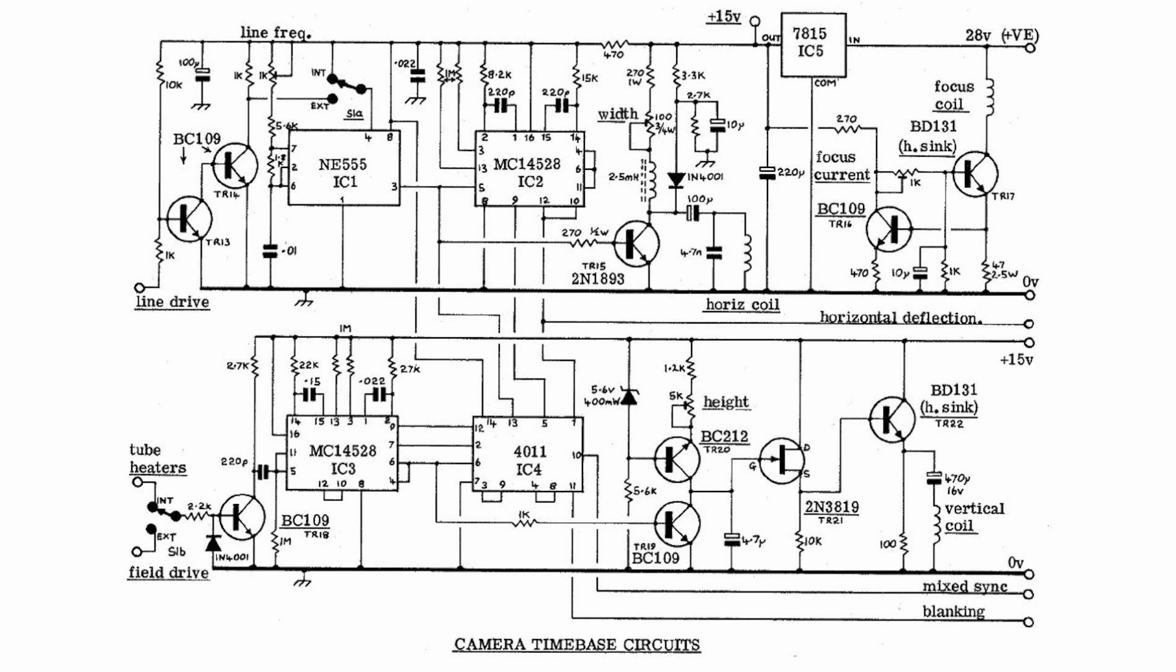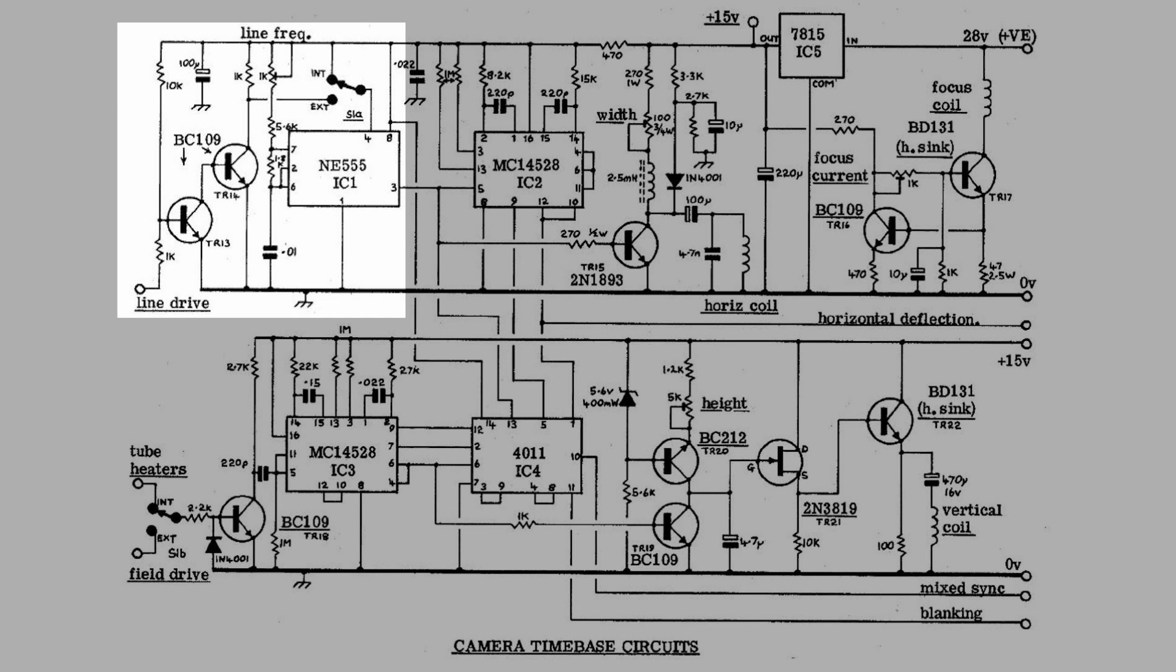So looking at this schematic, let's start by breaking it down into blocks. The first block, which I've highlighted here, is the clock oscillator that drives the horizontal scan. That's an NE555 configured as a stable multivibrator, or in other words, in simple terms, an oscillator. It does nothing more than output a pulse on pin three.